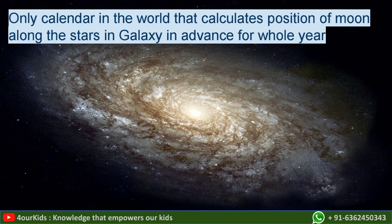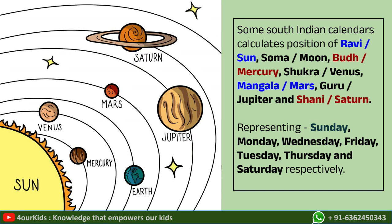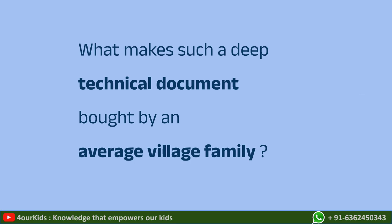The Hindu calendar is the only calendar in the world that calculates the position of the moon along the stars in the galaxy in advance for the whole year. We also have the position of planetary objects like the Sun, Moon, Mercury, etc., especially in the South Indian calendars. These planetary objects represent Sunday, Monday, Tuesday, Wednesday, and so on.